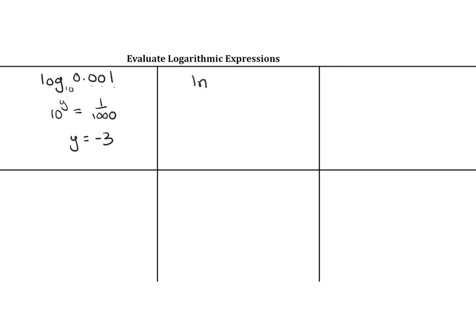ln of E to the power of 0.73. Anytime you have natural log of something E, they cancel out, so you're just left with 0.73.